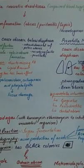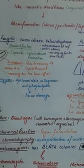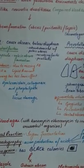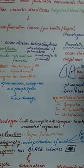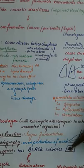Prevotella produces specific type of colonies when cultured — these colonies are blackish in color.